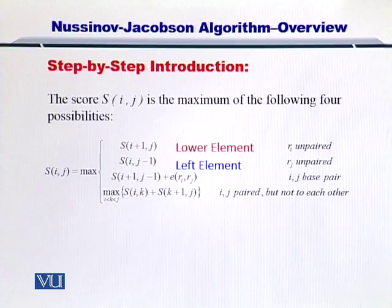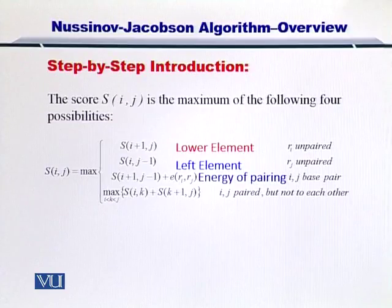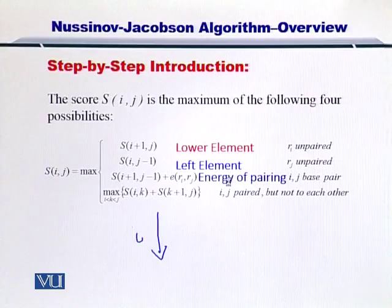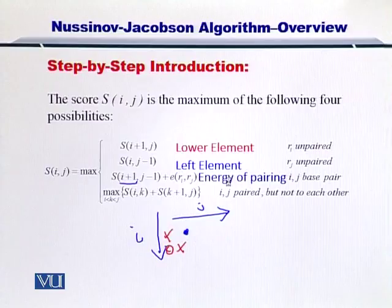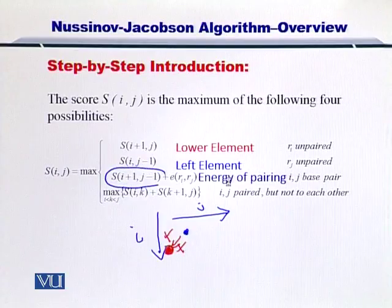Now let's consider the third score that we have to look at. The third score is essentially the diagonal below your current position. Let me elaborate. If this is your i and this was your j, then i plus one and if this is your current position, so i plus one would be here and j minus one would be here. So you are essentially looking for this value. So this is diagonally positioned below your current position. So this means that this score is the value of your diagonally lower element.